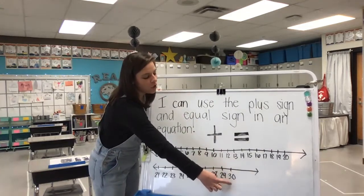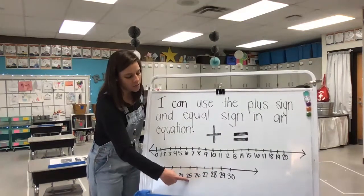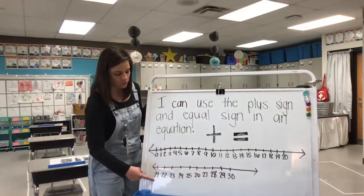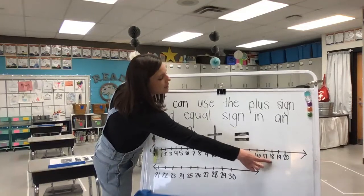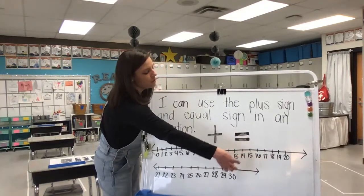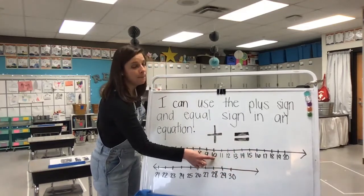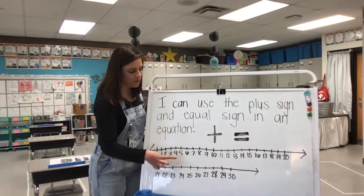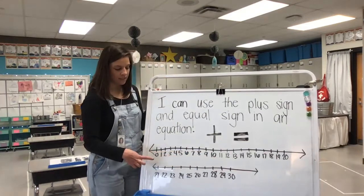Now counting backwards from 30: 29, 28, 27, 26, 25, 24, 23, 22, 21, 20, 19, 18, 17, 16, 15, 14, 13, 12, 11, 10, 9, 8, 7, 6, 5, 4, 3, 2, 1, 0.